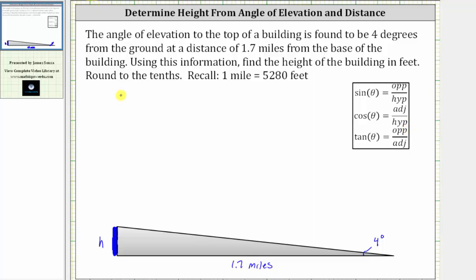So for our situation, tangent 4 degrees is equal to H divided by 1.7 miles.